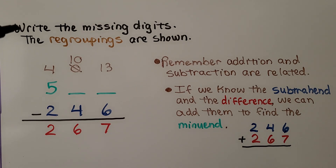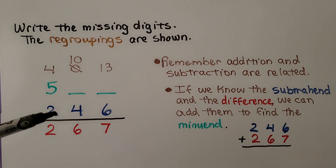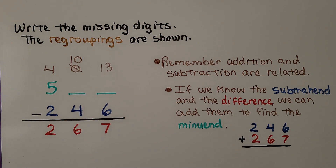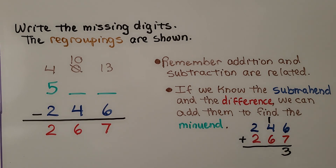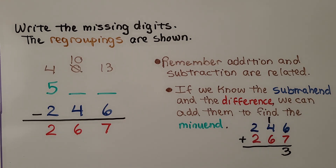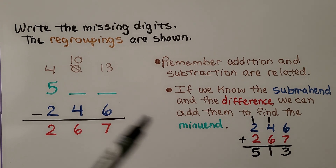Now it's telling us to write the missing digits, and the regroupings are shown. Remember that addition and subtraction are related. If we know the subtrahend and we know the difference, we can add them to find the missing minuend, just like when we were checking our subtraction. We start with the ones place: six plus seven is thirteen. We regroup a ten and put the three in the ones place. Now we add the tens: six plus four is ten, plus one more is eleven tens. We regroup one to the hundreds and put the remaining one in the tens place. Two plus two is four, plus one more is five. The missing minuend must be five hundred thirteen.